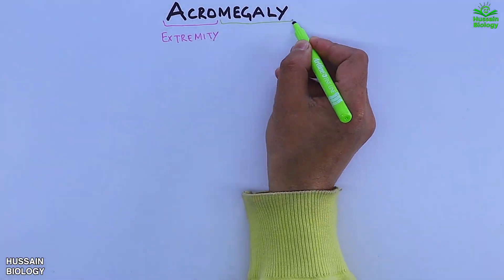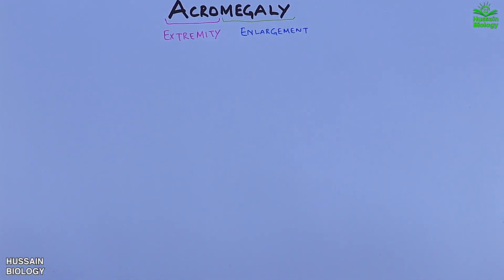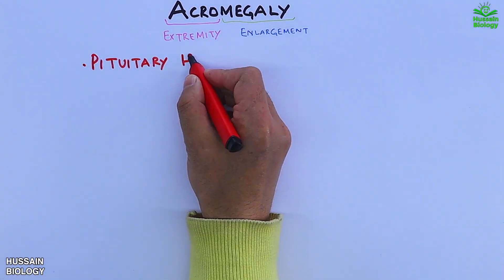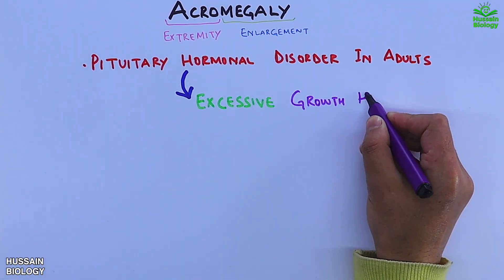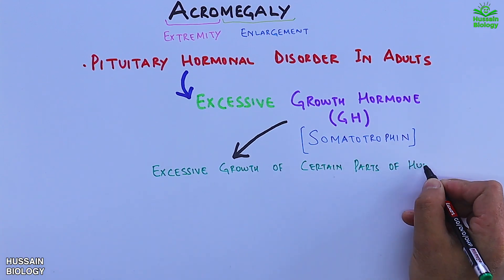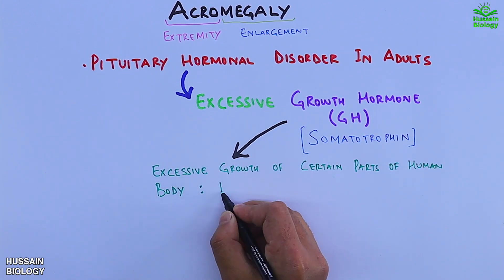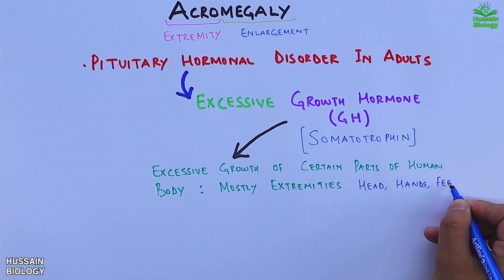The acromegaly comprises two words: acro means extremity and megal means enlargement. Acromegaly is a pituitary hormonal disorder in adults where we get the release of excessive growth hormone, that is somatotropin hormone. This hormone in excess leads to excessive growth of certain parts of the human body, mostly the extremities like head, hands, feet, etc.